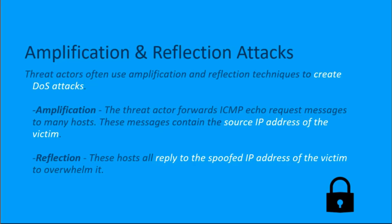With amplification, the threat actor is going to forward an ICMP echo request message to many hosts. These messages that we forward to these hosts all contain a spoofed source IP address — and that source IP address is of the victim we want to hit. So while we message all of these machines, all these messages have a spoofed source IP of the actual target.